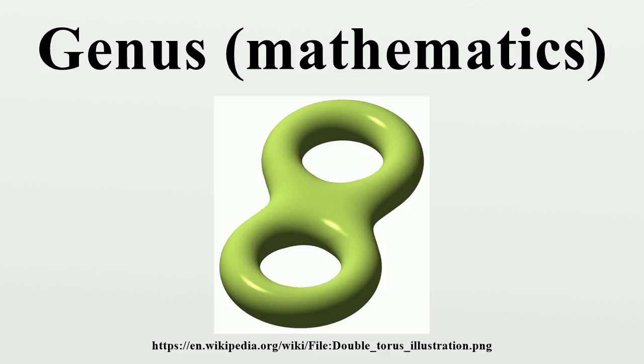Graph Theory: The genus of a graph is the minimal integer n such that the graph can be drawn without crossing itself on a sphere with n handles. Thus, a planar graph has genus 0 because it can be drawn on a sphere without self-crossing.